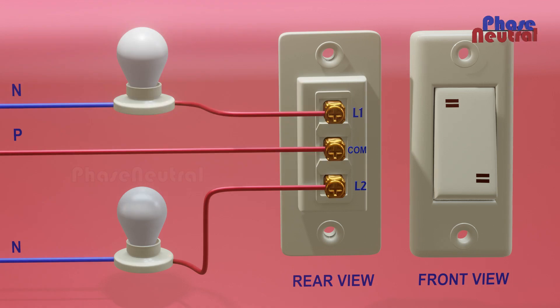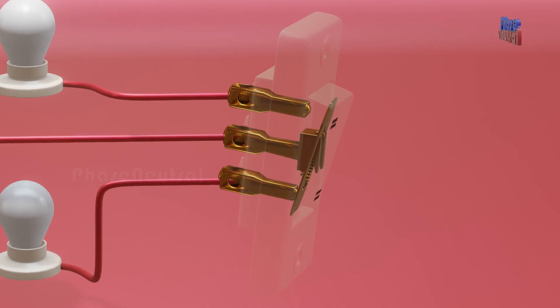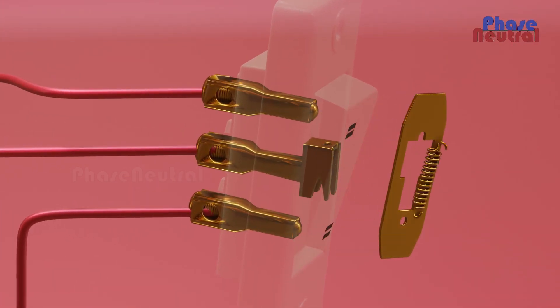Let's look at what is happening inside of a two-way switch. Mainly two parts are doing the switching function inside the two-way switch: the metal plate and spring.